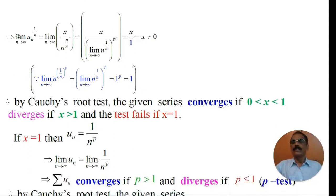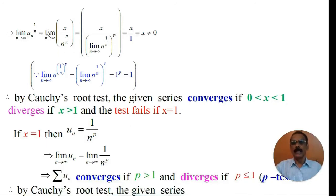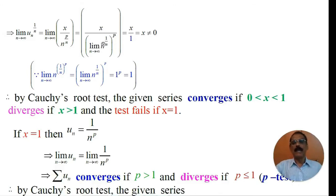Now, apply limit on both sides. The limit of the nth root of u_n as n tends to infinity equals the limit of x divided by n to the power p by n as n tends to infinity. In the numerator there is no n, so we need not apply limit to the numerator, but we apply it to the denominator. The limit of n to the power 1 by n as n tends to infinity to the power p has value 1. Therefore it is x divided by 1 to the power p. Since 1 to the power p is 1, it equals x by 1, that is equal to x. And x is non-zero. So the limit of the nth root of u_n is x.